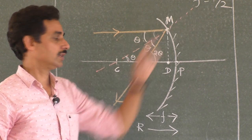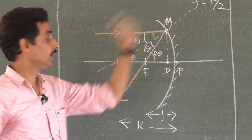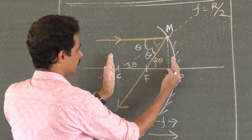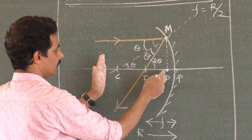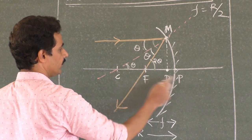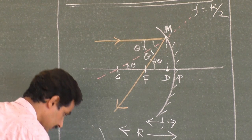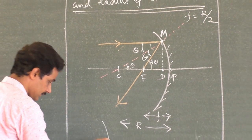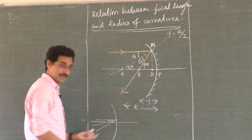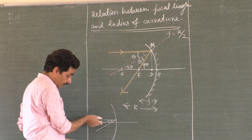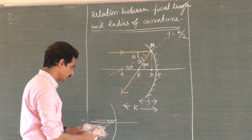To find the relation between F and R, search for the triangles where these two quantities appear. Radius R is in triangle MCP (or MCD), and focal length F is in triangle MFP. Remember this is an exaggerated diagram — the rays are actually very close to the principal axis, making very small angles. Only paraxial rays pass through a single focus.